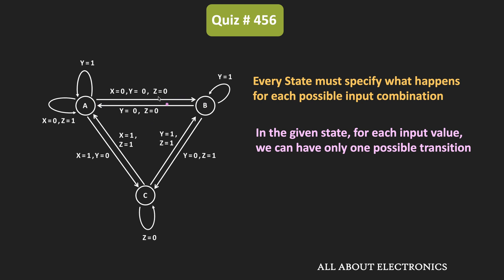For example, when X, Y, and Z is equal to 0, there is a transition from state A to state B. But for the same input, we cannot have another transition from the A state. If either of these conditions is not fulfilled, we can say that there is ambiguity in the state diagram. So here, we have been asked to find if there is any ambiguity in the given state diagram.